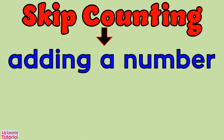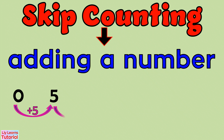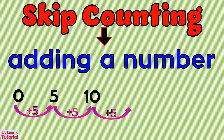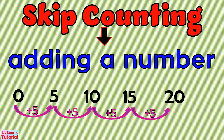We add 5 if we do skip counting by 5. From 0, we add 5 is 5. Plus 5 is 10. Plus 5 is 15. Plus 5 is 20. Plus 5 is 25. And so on.